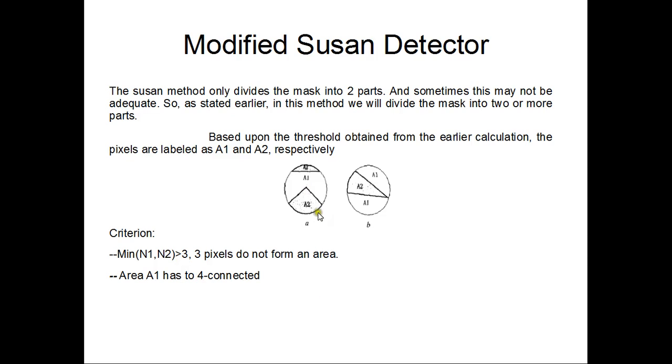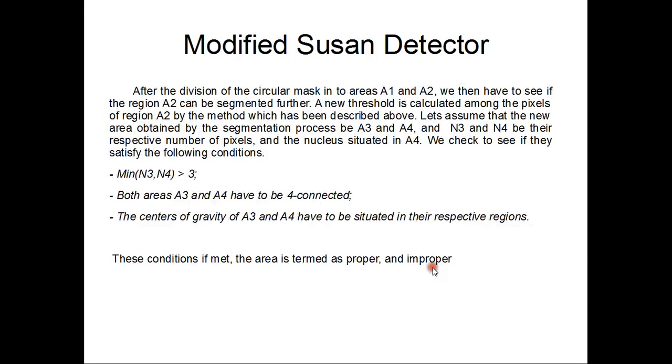By four-connected we mean that all the pixels are separated from each other by a distance of one move. If we move say up or left or down or right from a pixel, we should be able to move to the other pixel just in the course of one move. After the division of the circular mask into areas A1 and A2, we then have to see if the region A2 can be segmented further. The new threshold is calculated among the pixels of region A2 by the method which has been described above. Let's assume that the new area obtained by the segmentation process will be A3 and A4, and N3 and N4 be the respective number of pixels. The nucleus is situated in A4. We check to see if they satisfy the following criterion.